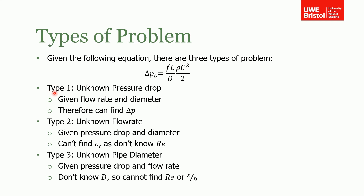Your first type of problem is where you have an unknown pressure drop — so we're just trying to find out the thing on the left hand side of this equation. In this instance we're likely to know the flow rate and the diameter, so it's quite easy to find the pressure loss, and I'll talk about that on the next slide.